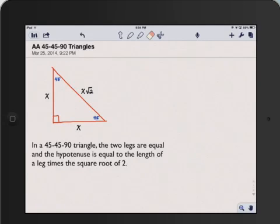So in this diagram, we have the two legs both equal to x, and the hypotenuse is equal to that number, x, times the square root of 2.